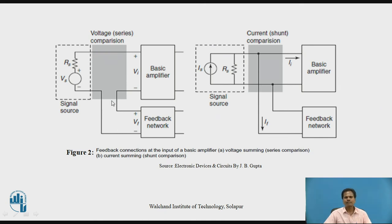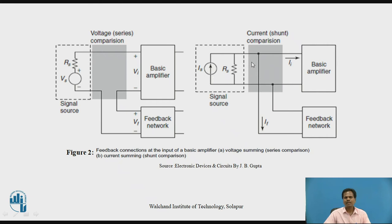Figure 2 shows a series connection at the input side, where the feedback voltage VF is combined in series with the external signal source voltage VS to form the effective input voltage. There is a series connection at the input whenever a voltage signal proportional to the output quantity is applied in series with the input. In the second figure, when the output of the feedback circuit is a current signal IF proportional to the sampled output quantity, it is applied in parallel (shunt) with the input current IS, and the effective input current I is the resultant of IF and IS.